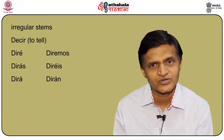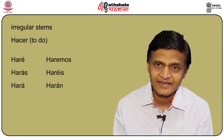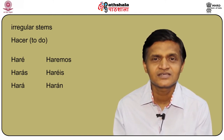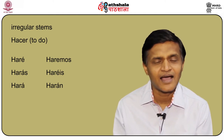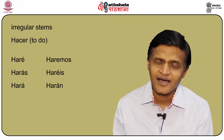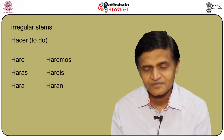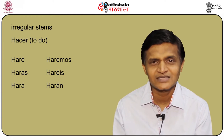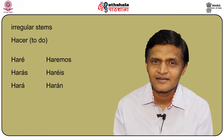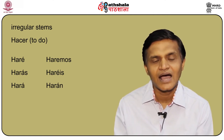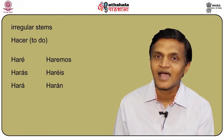Another verb is hacer — hacer becomes haré. The conjugation: yo haré, tú harás, él hará, ella hará, usted hará, nosotros/nosotras haremos, vosotros/vosotras haréis, and ellos/ellas/ustedes harán. Remember that these irregularities occur only in the radical or the stem, and the endings are the same for regular and irregular verbs in the future tense.